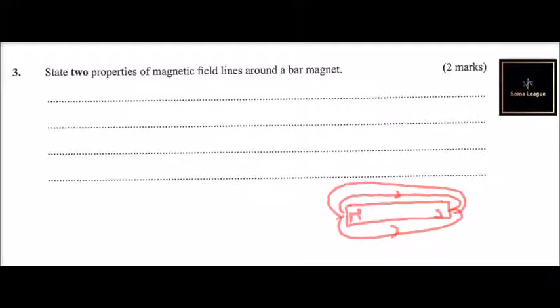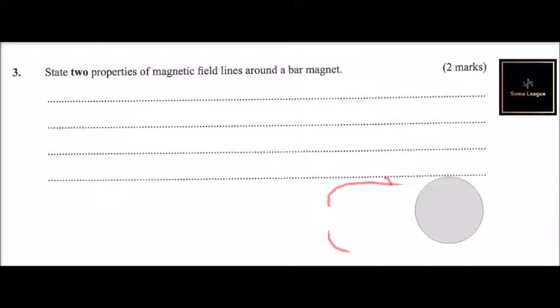You are supposed to state that the normal direction is from north to south. So that is what you are supposed to state. For the two properties, I'm going to give you four properties.